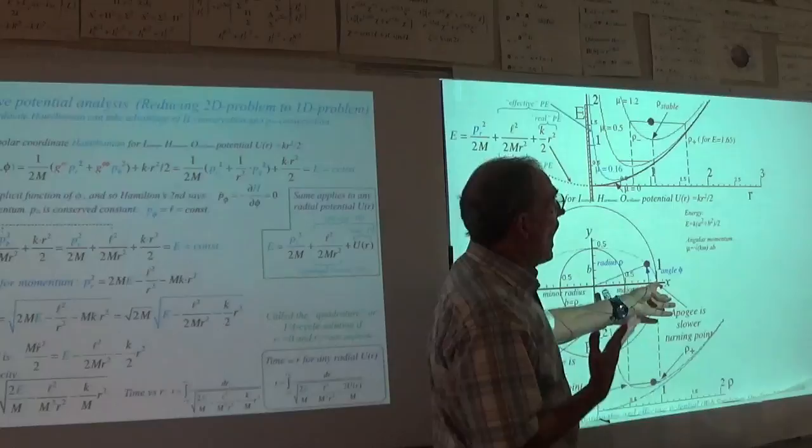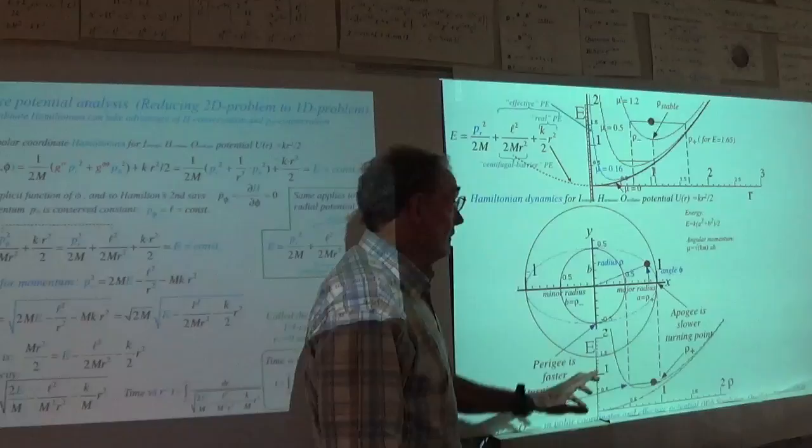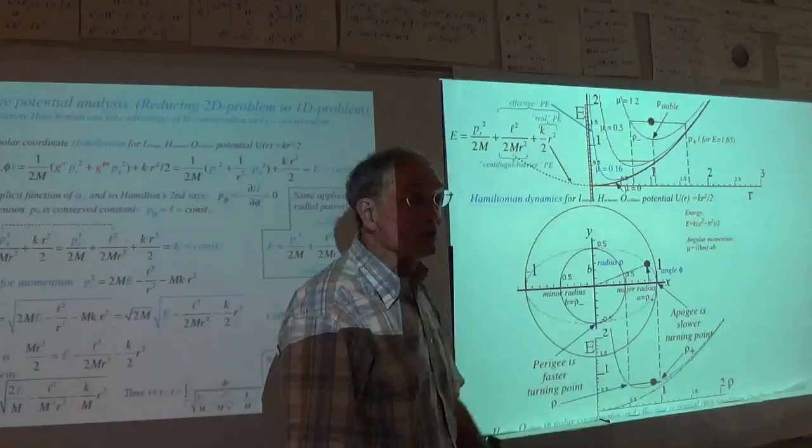You loiter past the apogee and then zoom past the perigee — like the Kepler stuff that we saw animated before. We're going to see that again here. Before we show animations and compare them, let me jump ahead to the Coulomb case.